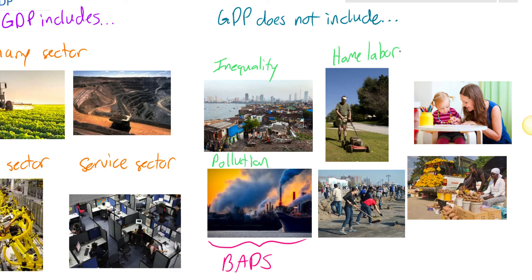Does mowing his own lawn make him and his family better off? It sure does, but it's not measured in GDP. Work that people do around the home — including child-rearing — is not counted. Mothers or fathers that stay home to take care of children: their decision to do that actually makes a country's GDP smaller. Does it make the country worse off? Absolutely not — society needs people to stay home and take care of their children. However, it's not recorded in GDP.